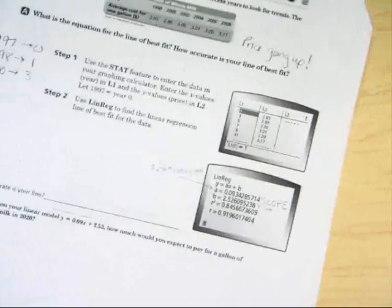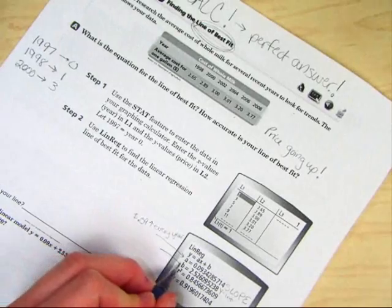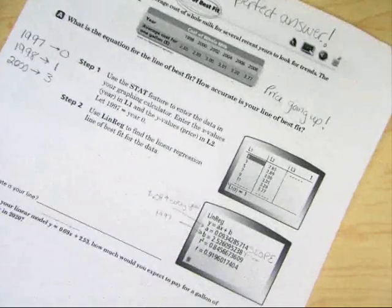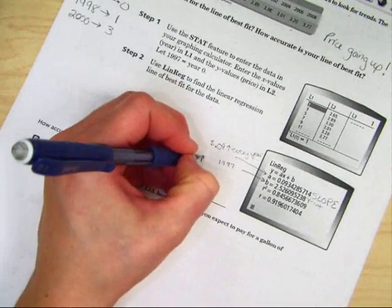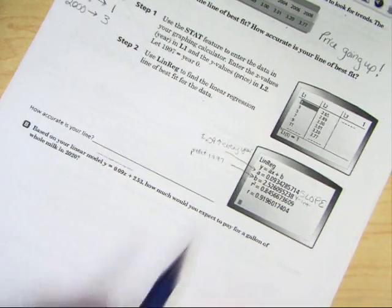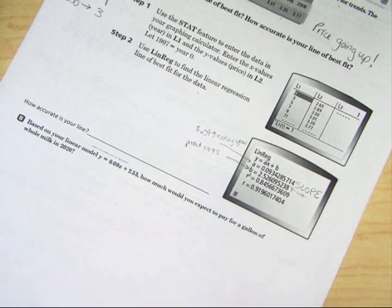If you want to write that down, you can. B is the, this would be what they predict 1997 to be. R squared and R tell you how well your data fits. How accurate is your line? Well, let's take a look at R and R squared.